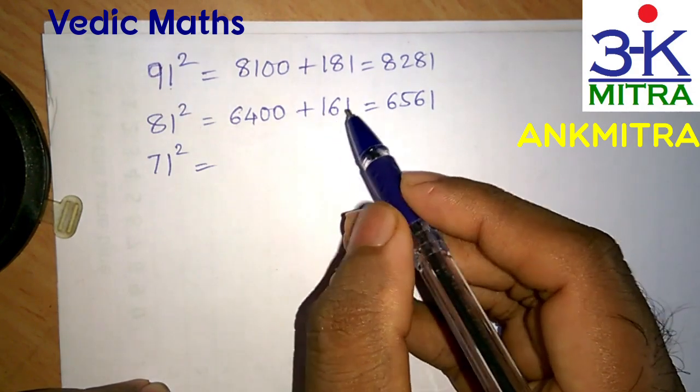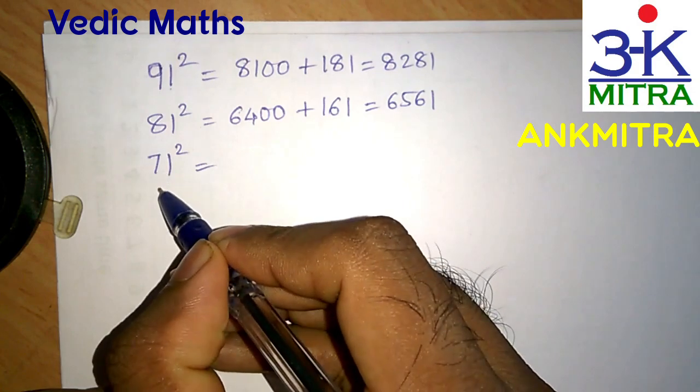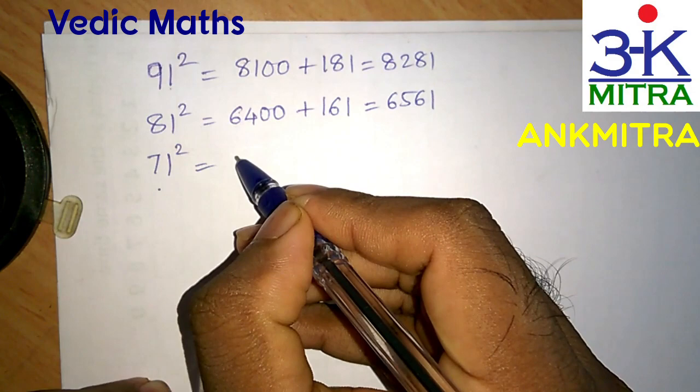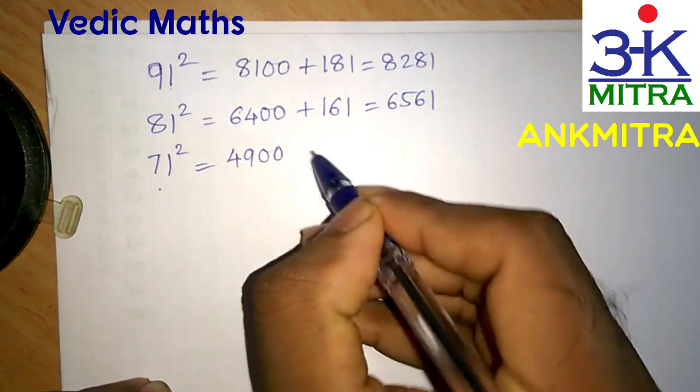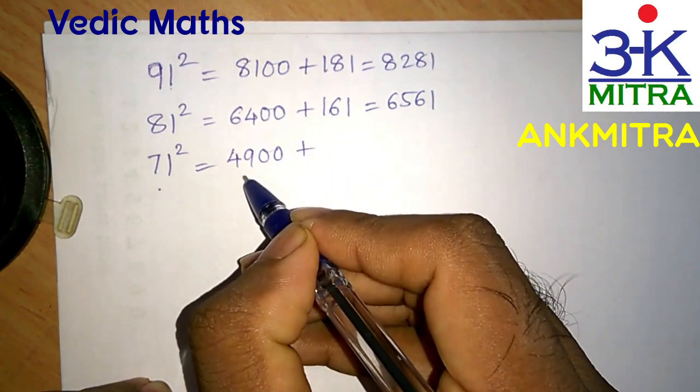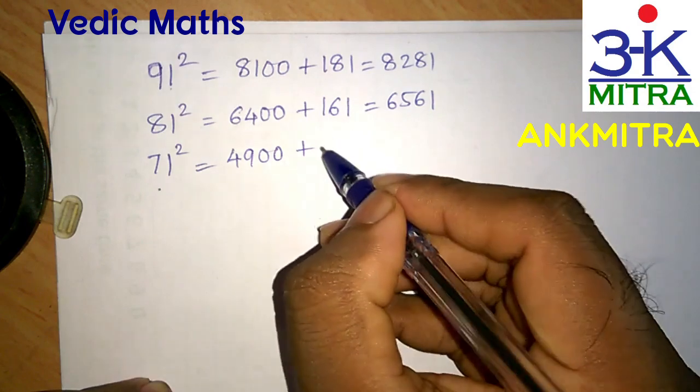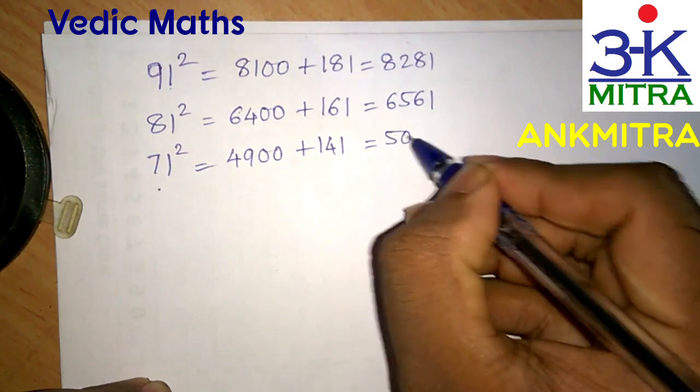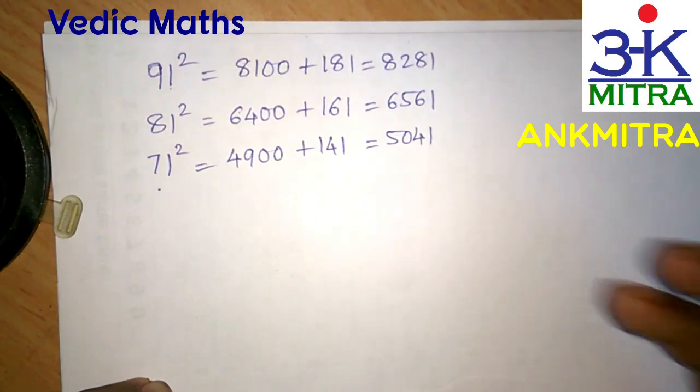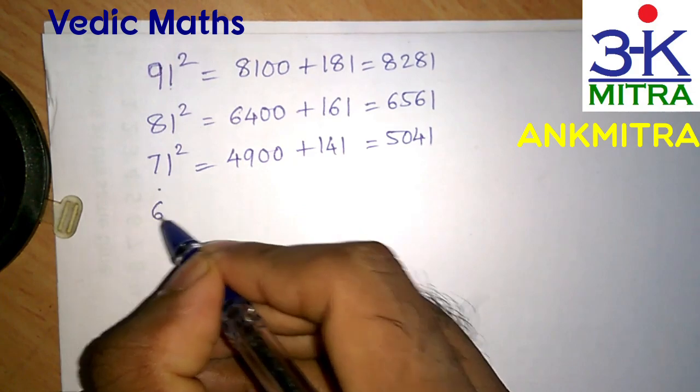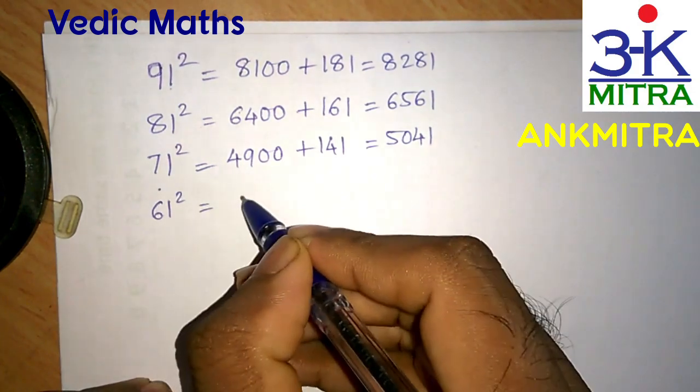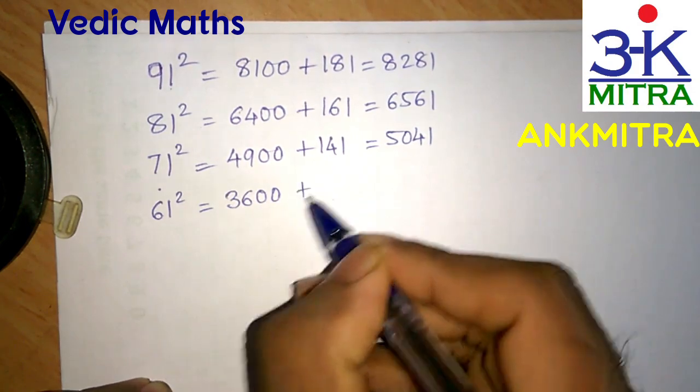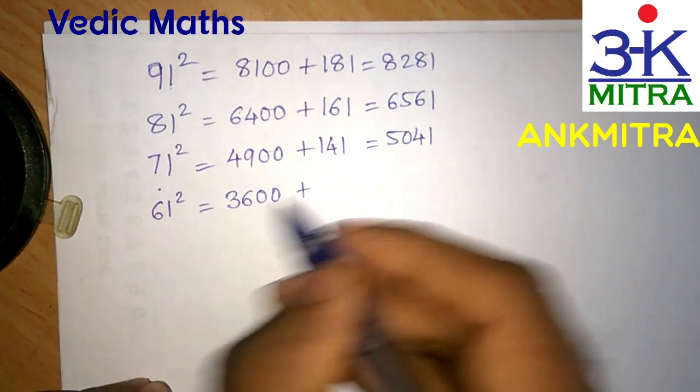Similarly, for 71 squared: first write down the square of 70, which is 4900, then add the sum of 70 and 71, which is 141. The answer is 5041. Let's take another example: 61 squared. First write down the square of 60, which is 3600, then add the sum of 60 and 61, which is 121, giving us 3721.